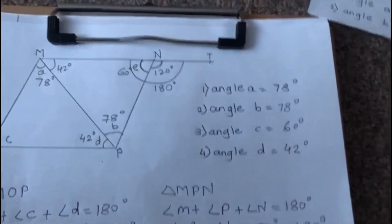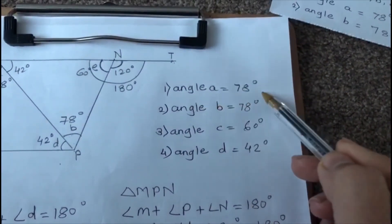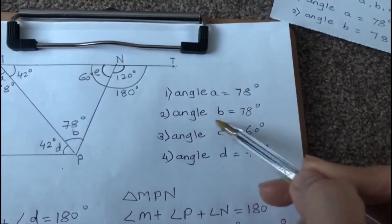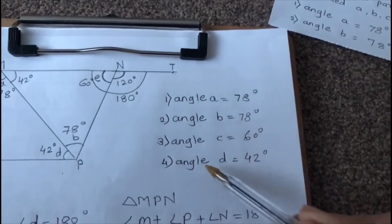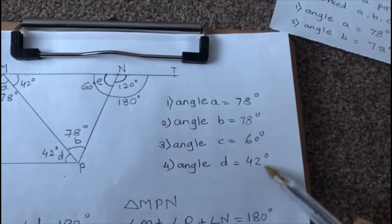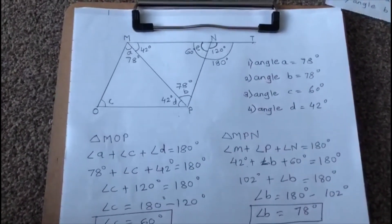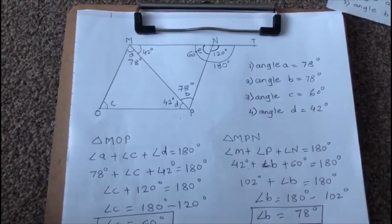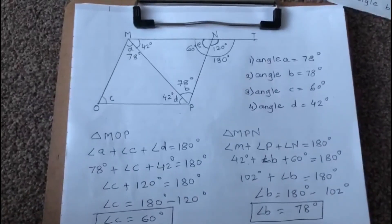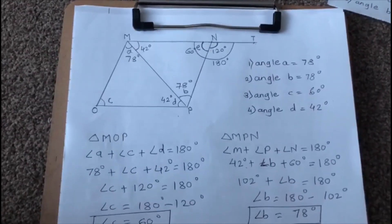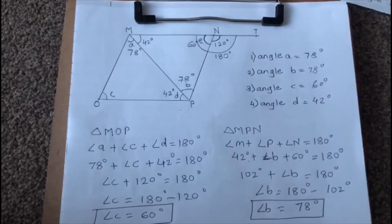We have got all the answers: angle A is 78 degrees, angle B is 78 degrees, angle C is 60 degrees, and angle D is 42 degrees. I hope this video is helpful for those students who are struggling to solve such types of problems. Keep watching my videos and don't forget to subscribe to my channel. Thank you.